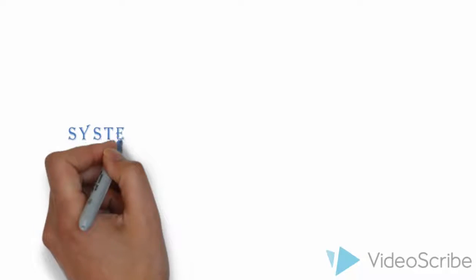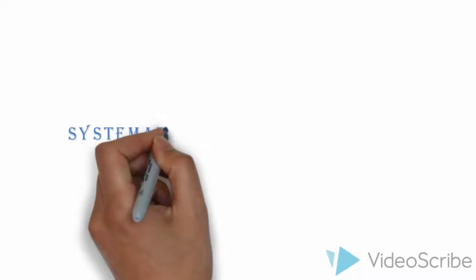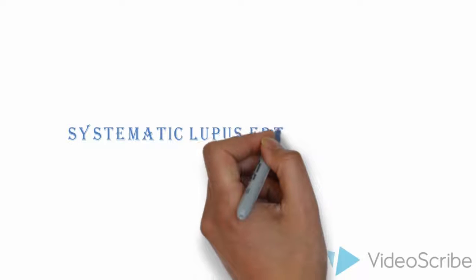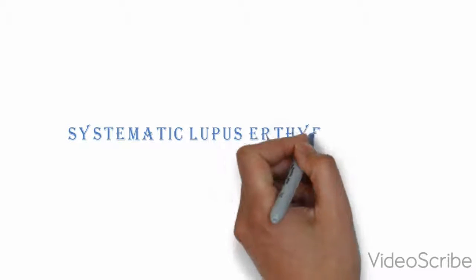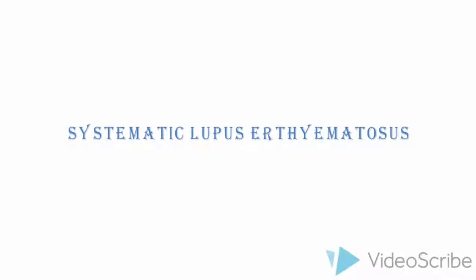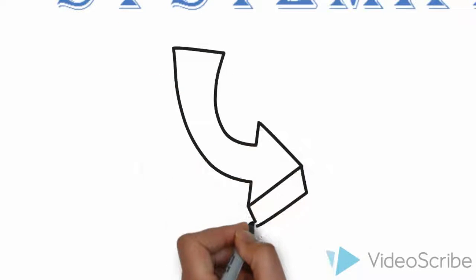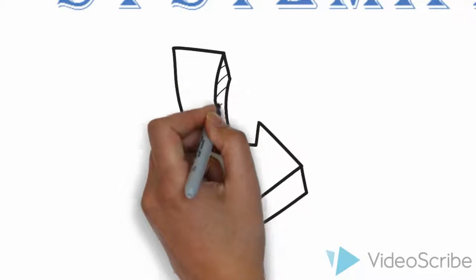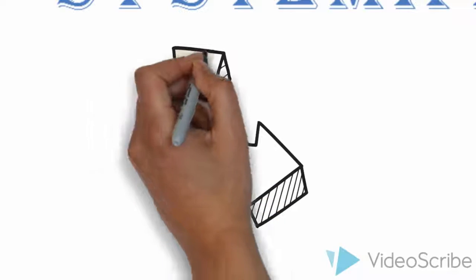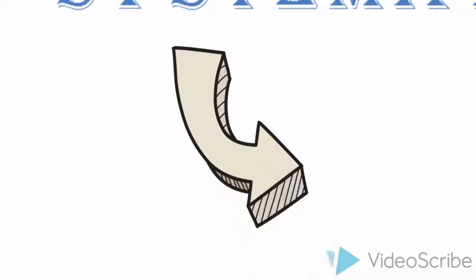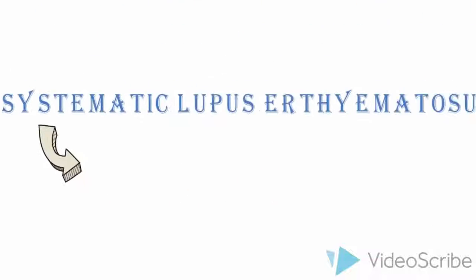Okay, systemic lupus erythematosus. What is systemic lupus erythematosus? Well, we'll break it down. Systemic means it affects multiple organs within our body.